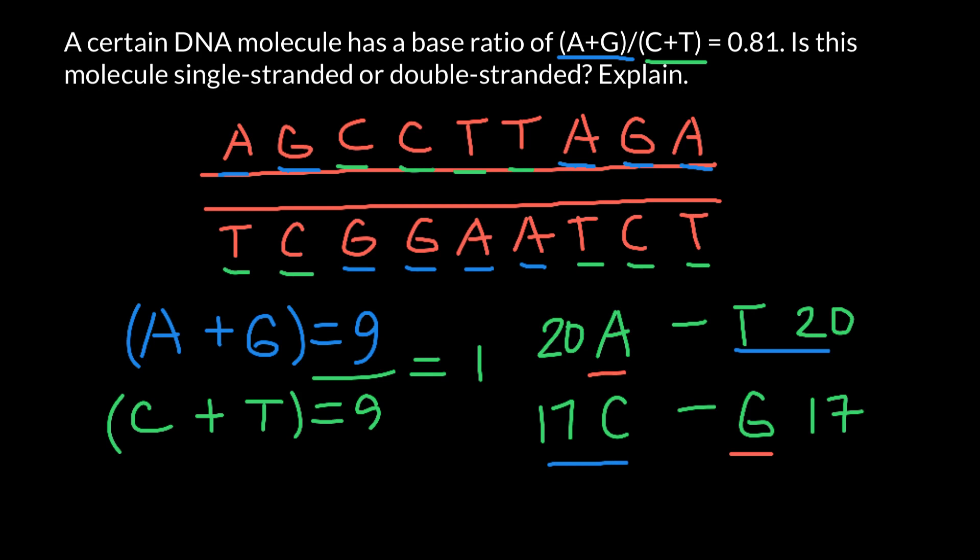So take a look. Here we got 20 plus 17, which is 37. And here we also got 17 plus 20, which is 37. 37 divided by 37, we are going to get the same number, 1.